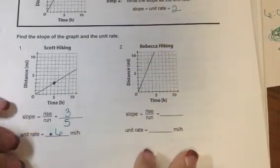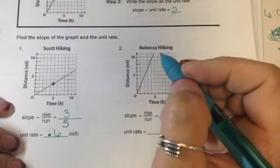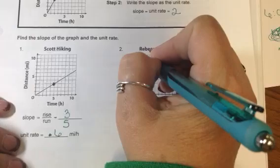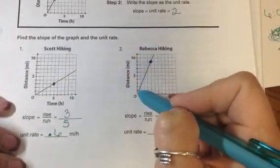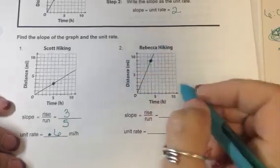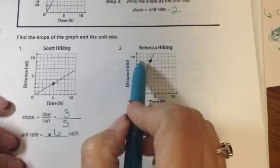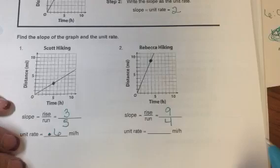Let's look at Rebecca. She's hiking too. And let's find a place where she crosses. I'm going to go way up here. And I'm going to say I'm going to rise 1, 2, 3, 4, 5, 6, 7, 8, 9. So 9 is my rise. And I'm going to run 1, 2, 3, 4. 4 is my run.